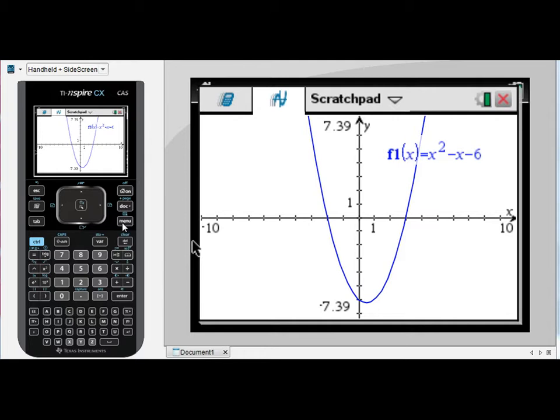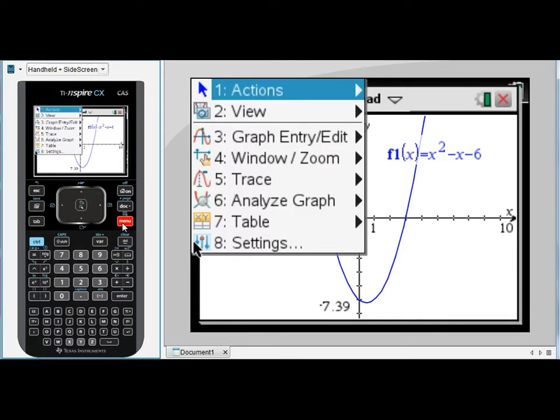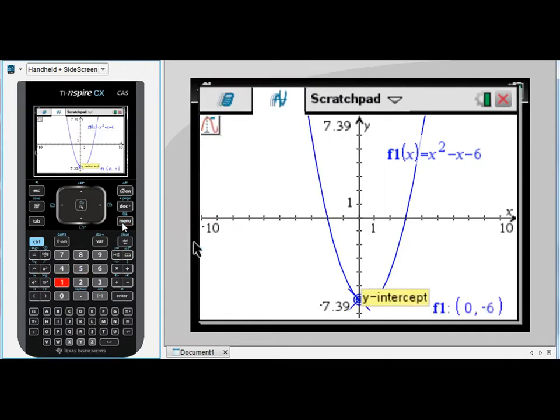I've drawn a fairly simple parabola here, y equals x squared minus x minus 6. I'm now going to press Menu, 5 for Trace and 1 for Graph Trace.